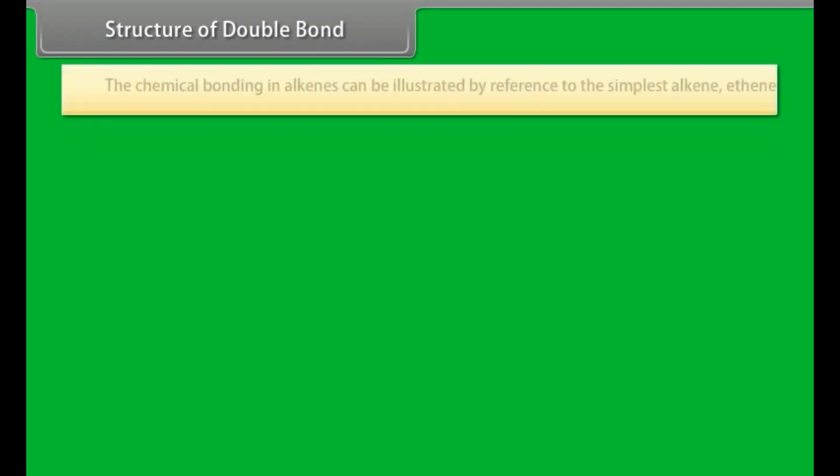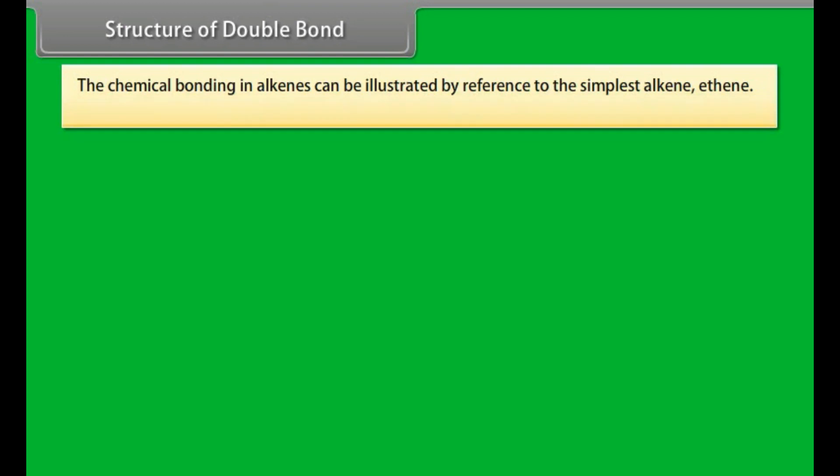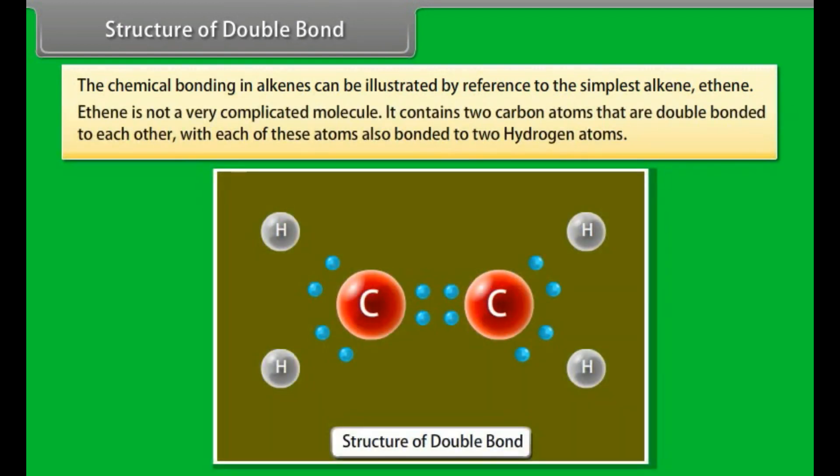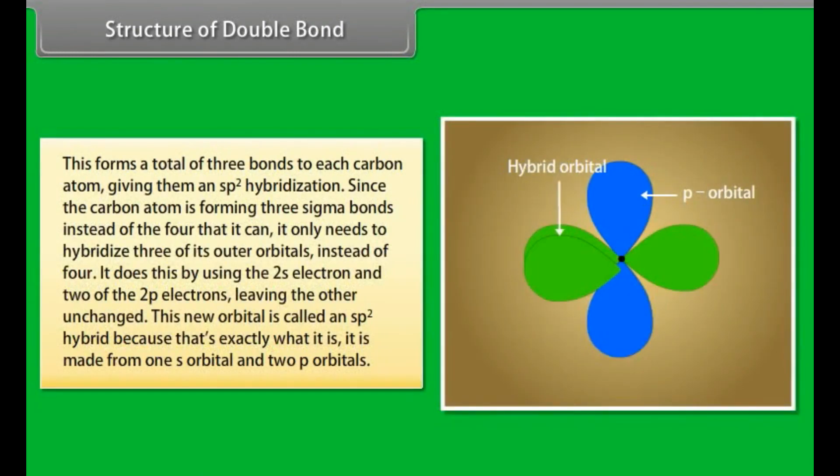Structure of double bond. The chemical bonding in alkenes can be illustrated by reference to the simplest alkene, ethene. Ethene is not a very complicated molecule. It contains two carbon atoms that are double bonded to each other, with each of these atoms also bonded to two hydrogen atoms. This forms a total of three bonds to each carbon atom, giving them an sp2 hybridization. Since the carbon atom is forming three sigma bonds instead of the four that it can, it only needs to hybridize three of its outer orbitals instead of four. It does this by using the 2s electron and two of the 2p electrons, leaving the other unchanged. This new orbital is called an sp2 hybrid because that's exactly what it is. It is made from one s orbital and two p orbitals.